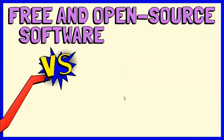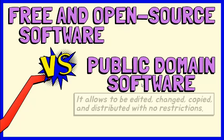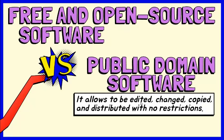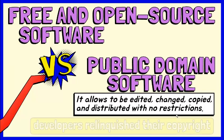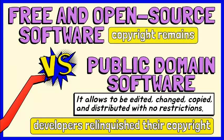Like free and open source software, public domain also has the potential to have no limitations on the usage of its program. Public domain software allows being edited, changed, copied, and distributed with no restrictions. The software has no ownership because the developers have relinquished their copyright of it. However, for free and open source software, copyright remains.